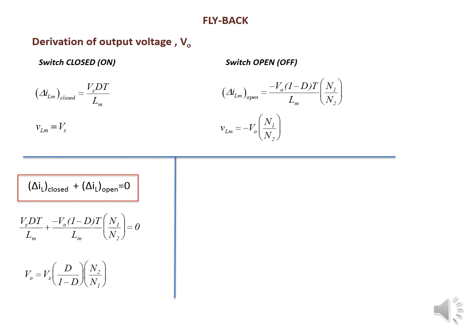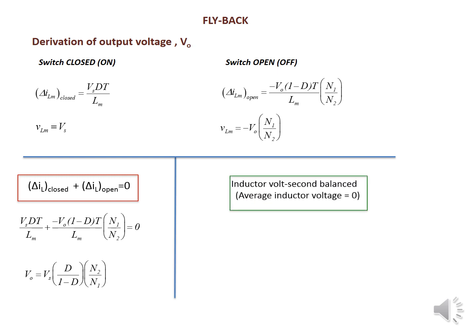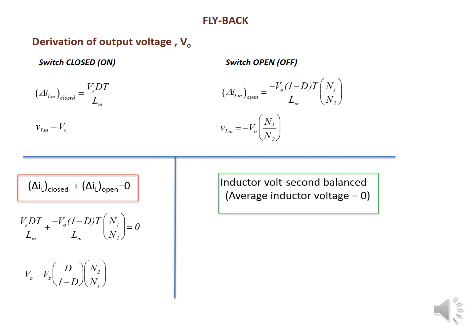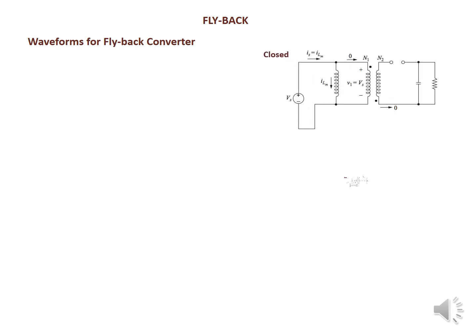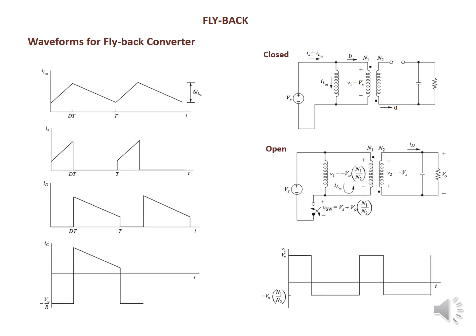Solving this, V0 equals Vs·(D/(1−D))·(N2/N1). Since the average inductor value is zero, we can write: D·Vs minus V0·(N1/N2)·(1−D)·T equals zero, confirming V0 equals Vs·(D/(1−D))·(N2/N1). The waveforms of the flyback converter show the closed and open circuit conditions with the graphs provided.